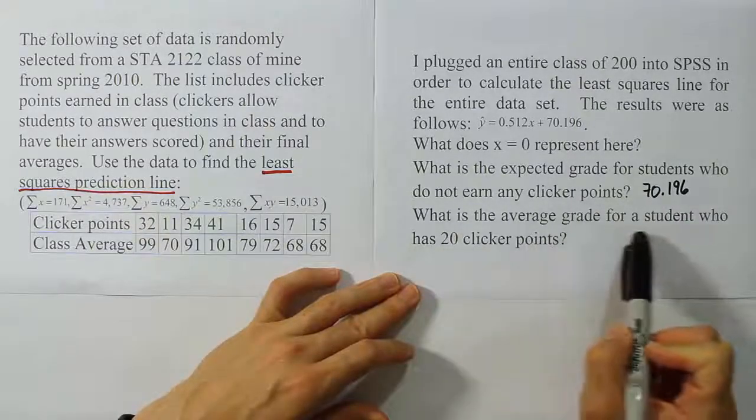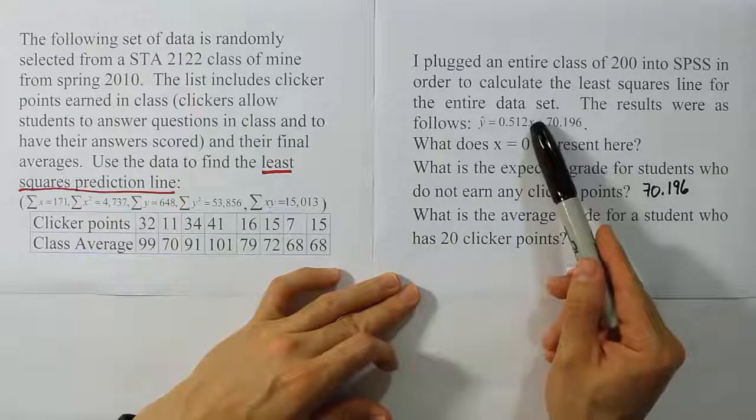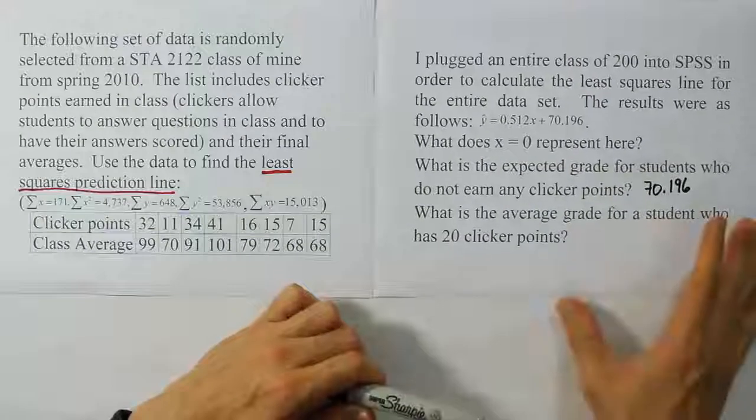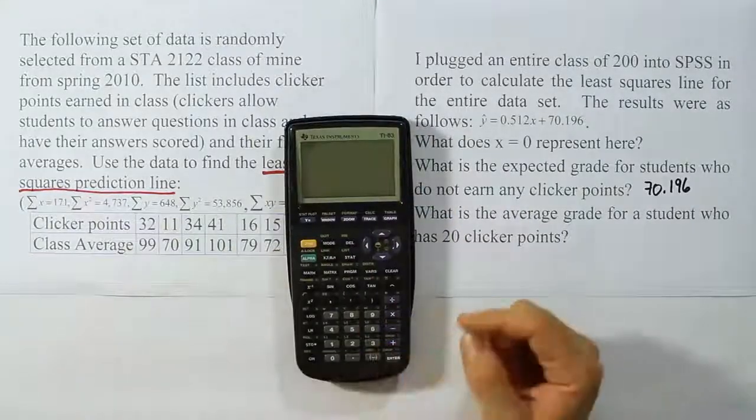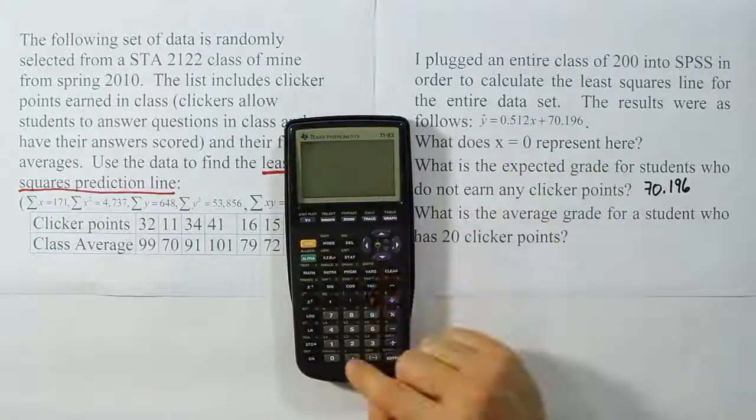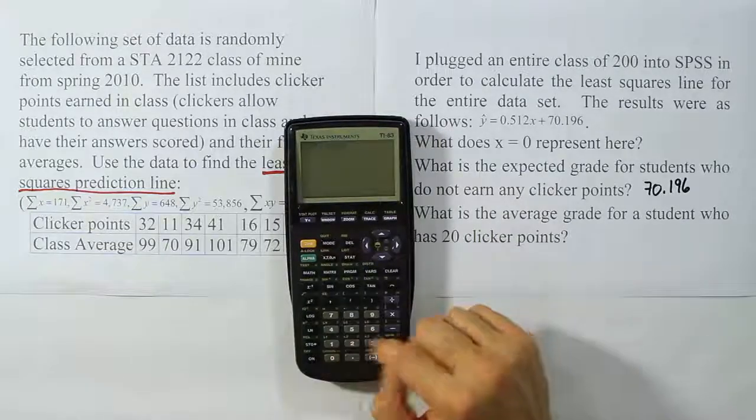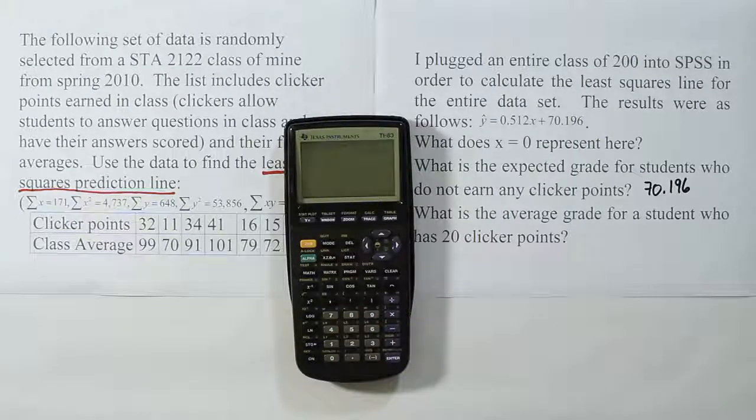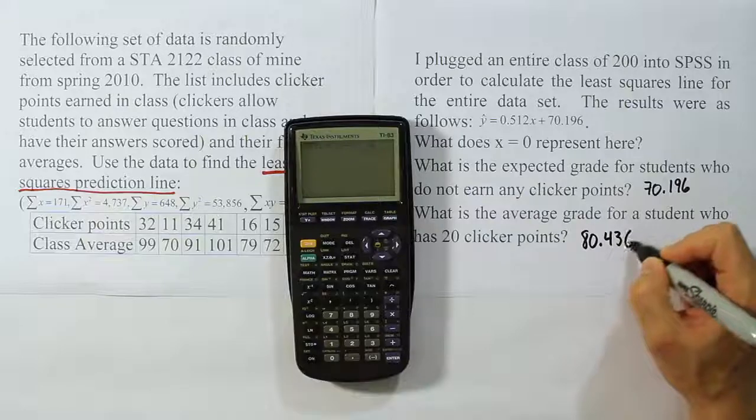Finally it says, what is the average grade for a student who has 20 clicker points? Well, remember, X is the clicker points. We enter that in and this will produce the average grade that we expect to see for a student who has 20 clicker points. Let's go ahead and do that. I take the equation, 0.512 times 20 plus 70.196. When I enter that, I get the answer 80.436.